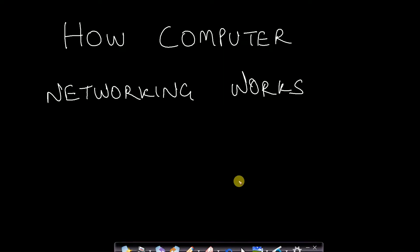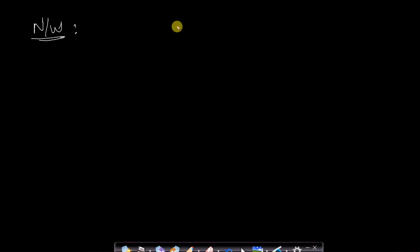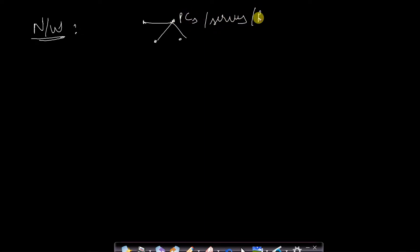Hello guys, welcome back to Tech Dose. In this video we will see how computer networking really works. Before looking at that, we need to look at some very simple concepts. First, what is a network? A network is nothing but a group where nodes are connected together. These nodes may be our PCs, servers, or routers — a collection of PCs, servers, and routers connected together forms a network.